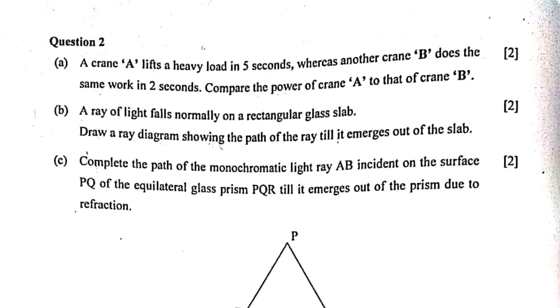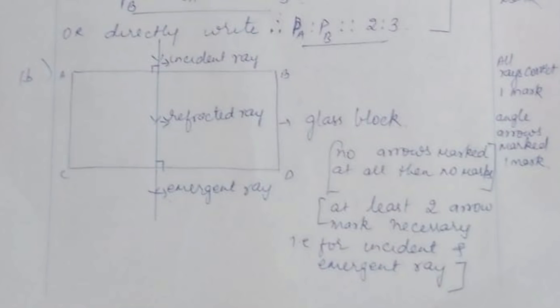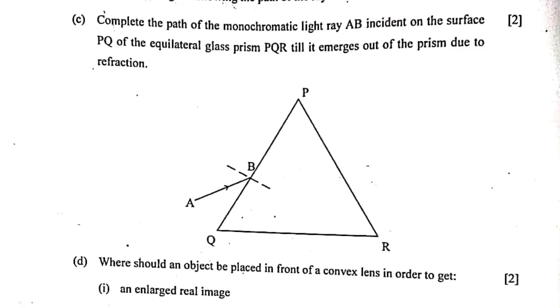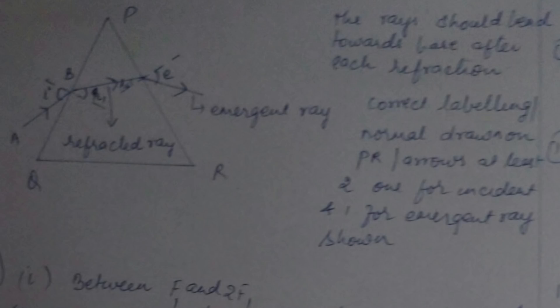Question 2b: A ray of light falls normally on a rectangular glass slab — draw a ray diagram showing the path of the ray till it emerges out of the slab. The diagram is on the screen. Draw the rays correctly for one mark and include at least two arrows for the second mark. Question 2c: Complete the path of monochromatic light ray AB incident on surface PQ of equilateral glass prism PQR till it emerges out due to refraction. Label the diagram correctly with angles for full marks.